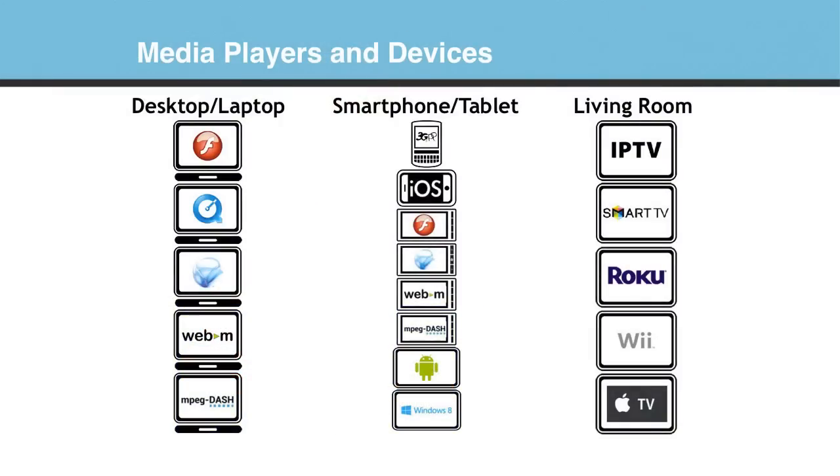In the living room, increasingly we see large operators like Comcast converting more and more to IP-based delivery and second screen delivery. Through all the devices on the market — smart TVs pointing to YouTube and Netflix, Roku devices, a Wii, Xbox 360, or Apple TV — you need to be able to hit all of those devices as well, or at least some of them. We want to make sure whatever format we use will address all of those.